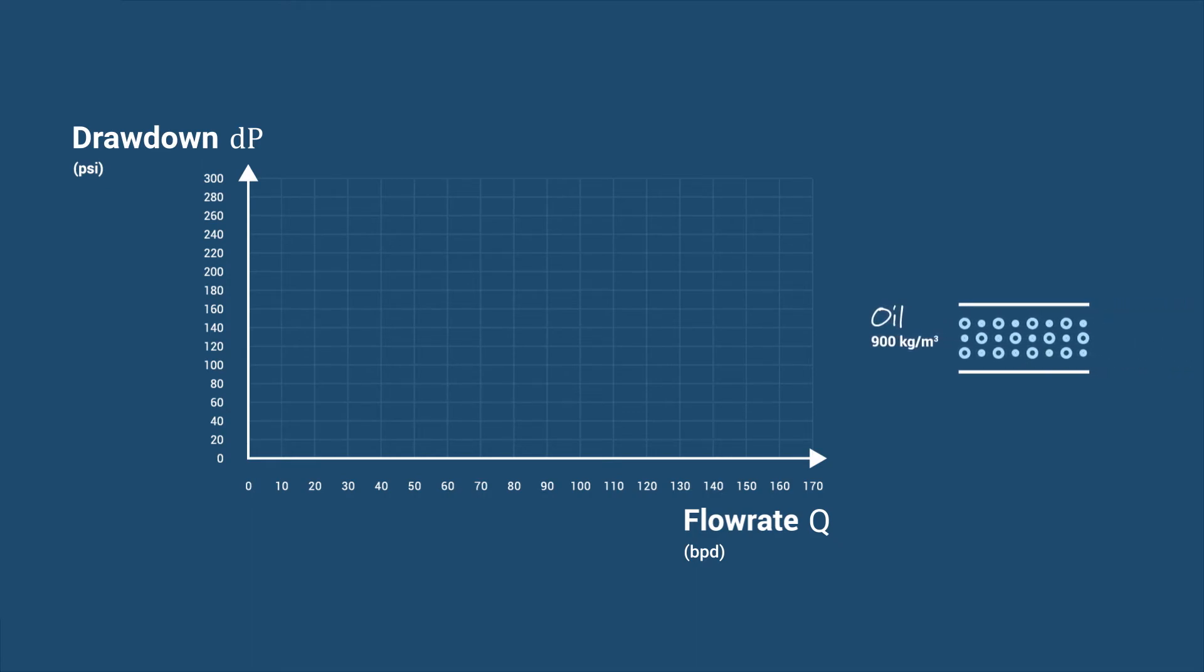With an oil density of 900 kilograms per meter cubed, the oil performance curve will look like this. This means that if the drawdown pressure is 100 psi, you will produce 55 barrels of oil per day.